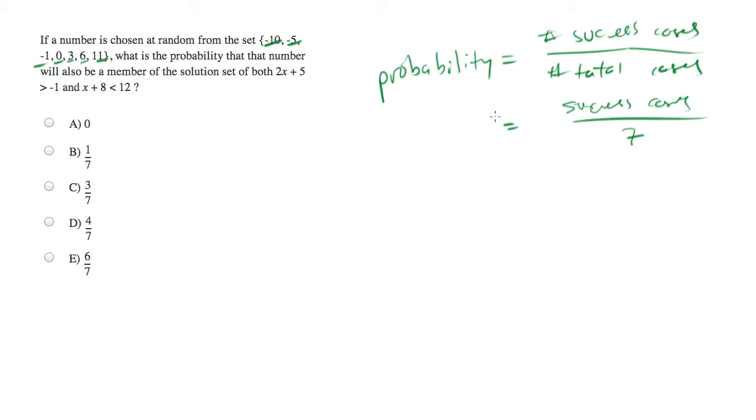What remains is calculating the number of success cases and to do that we need to know which of those numbers in that set also meet the following given criteria. And that is 2x plus 5 is greater than negative 1 and x plus 8 is less than 12.